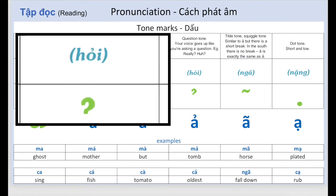In the question tone, hỏi, your voice goes up like you are asking a question. Really? Or hở. A. A. Examples: Mả, Ngả, Kẻ.